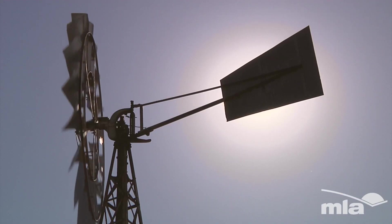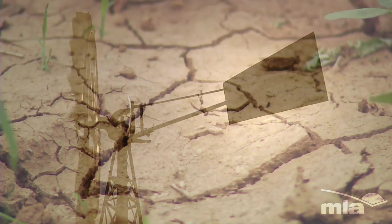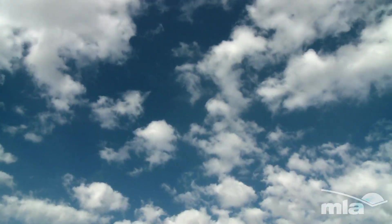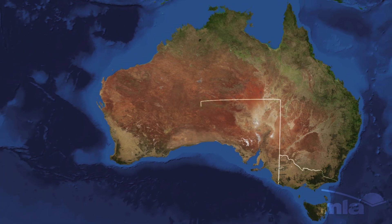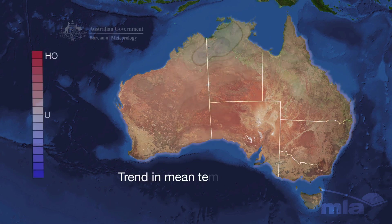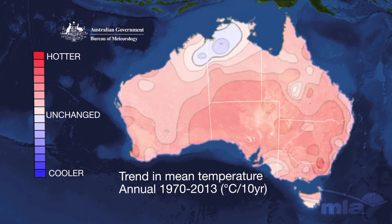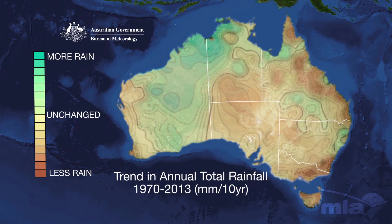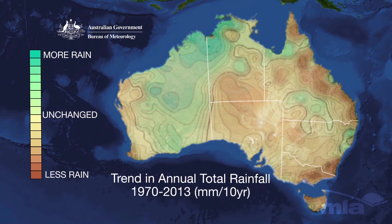We all know there are three types of annual rainfall in Australia: too little, too much, and everything in between. However, in recent decades, scientists have observed some consistent changes to our climate, such as warmer temperatures in both summer and winter. And some rainfall patterns, like the autumn break in southern Australia and the wet season in northern Australia, seem to be less predictable and more extreme.